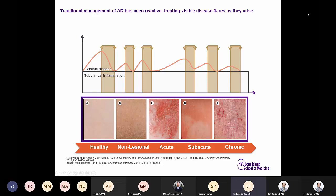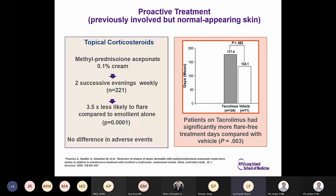Reactive treatment addresses visible disease but stops when disease is not visible, leading to cycles of flares. Proactive treatment has been shown to be effective: applying topical corticosteroids to areas that usually flare — such as antecubital or popliteal fossae — on two successive evenings weekly showed patients were 3.5 times less likely to flare compared to emollient alone, with adverse side effects rarely seen. Twice-weekly tacrolimus similarly showed significantly more flare-free treatment days compared to vehicle.